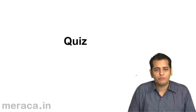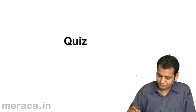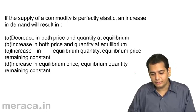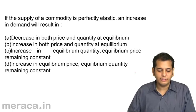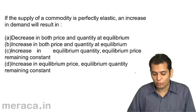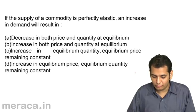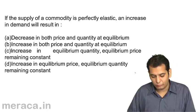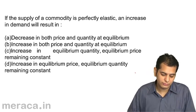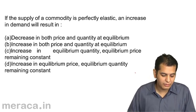Let's do a short quiz on what we have learned in the topic of supply. First question: if the supply of a commodity is perfectly elastic, an increase in demand will result in — A: a decrease in both price and quantity at equilibrium, B: increase in both price and quantity at equilibrium, C: increase in equilibrium quantity with equilibrium price remaining constant, D: decrease in equilibrium price with equilibrium quantity remaining constant.